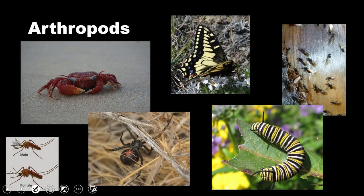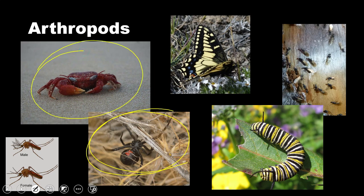Now arthropods, most of them don't bother us. Yeah, you've got the spiders that might bite us and whatnot. Lots and lots of insects, a few crabs and lobsters and things under the ocean.